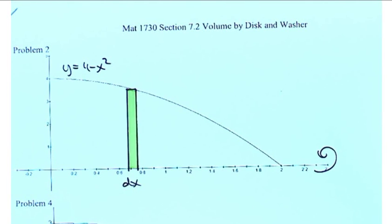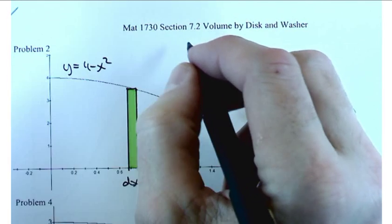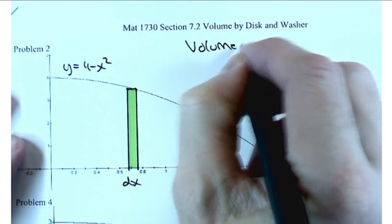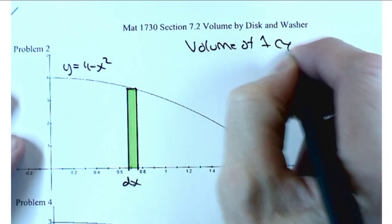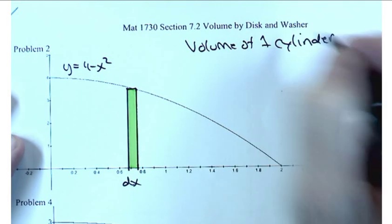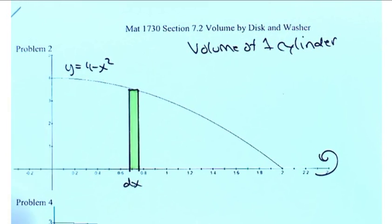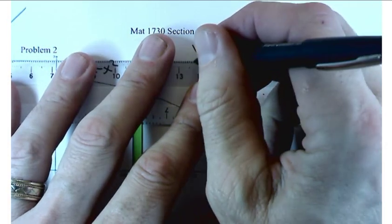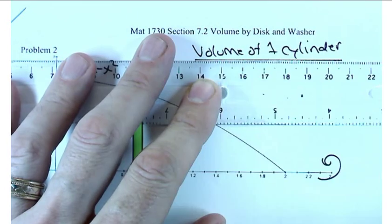When we rotate that slice around the x-axis, this area is going to sweep out a very short cylinder. I want to calculate the volume of one such cylinder — and this is the disk method.